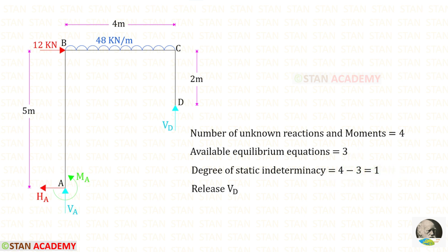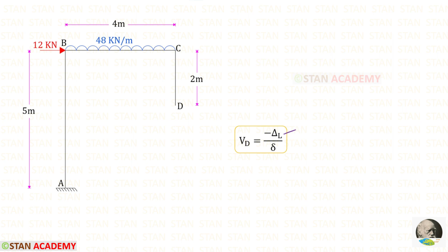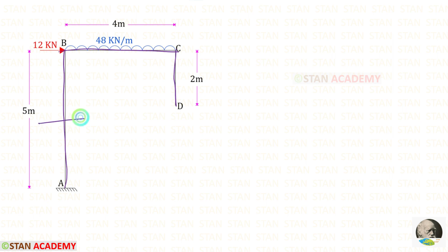Let us release VD. We know the formula to find VD: minus delta_L upon delta. To find both of these we are going to use the unit load method. We have to make sections. In this frame there are three different parts: AB, BC, and CD, so we have to make three sections — one in AB, one in BC, and one in CD.